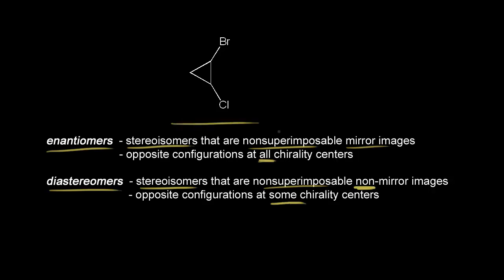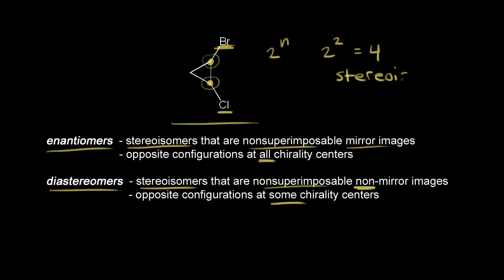If we look at this compound, we have a cyclopropane ring with a bromine and a chlorine coming off. We know from earlier videos that there are two chirality centers. The total number of stereoisomers is 2^n, where n is equal to the number of chiral centers. Since n equals two, we would expect to draw 2^2, or four stereoisomers total.